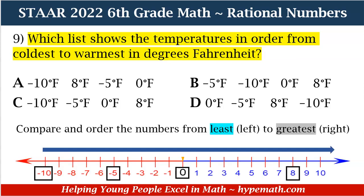How do we solve this problem? We need to compare and order the numbers from least to greatest. Here we have our number line, and we've already said we need to order our numbers from left to right, because that is least to greatest — or coldest to warmest. We see that we start with negative 10, next on our list is negative 5 following the arrow, then 0, and then 8.